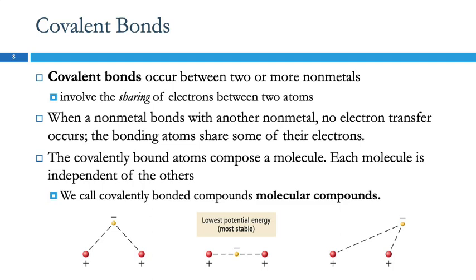In the ionic compound, there is no specific molecule. You can think of a grain of table salt as being one giant molecule. It's just alternating cations and anions throughout the whole thing. Whereas covalent compounds have discrete molecules, like the water molecule. So we call covalently bonded compounds molecular compounds because they have molecules.